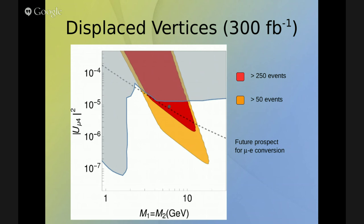For instance, if nature places itself on the benchmark point shown on the screen, we would find a nice cross-check between mu-e conversion and the search for displaced vertices — an interplay between low-energy and high-energy experiments.